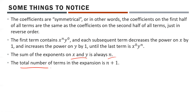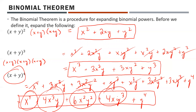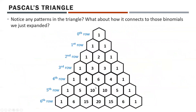The total number of terms in the expansion is n plus 1. For example, with the power of 4, counting the terms: 1, 2, 3, 4, 5 — yes, that's n plus 1. Interesting. That brings us into a little thing called Pascal's Triangle, and I want to see if you can come up with the pattern.